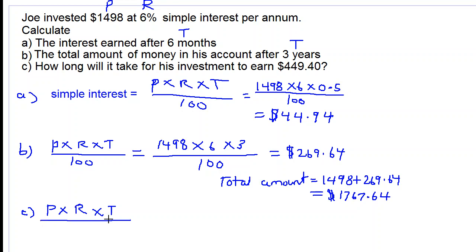This is equal to the interest of $449.40. Let's substitute values: principal is 1498, rate is 6%, time is unknown, all over 100 being equal to $449.40. Let's multiply both sides by 100. So we will get 1498 times 6 times T equals 449.40 times 100.